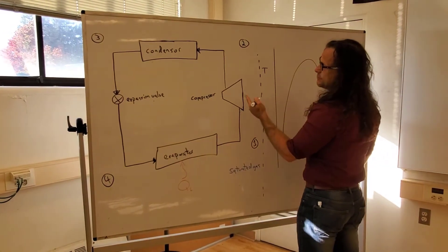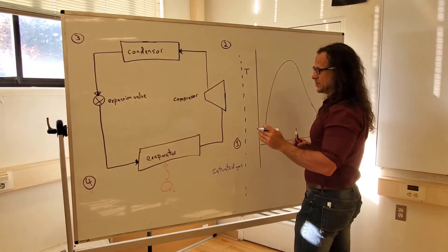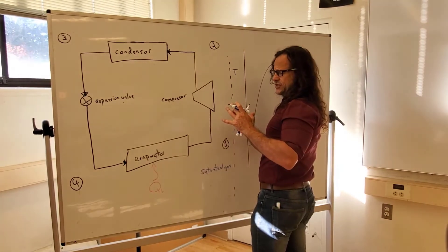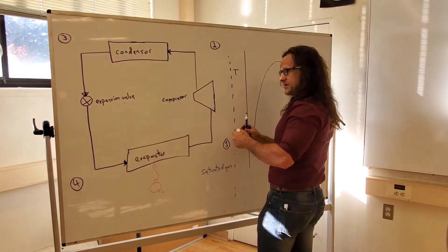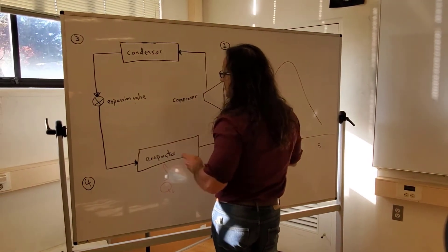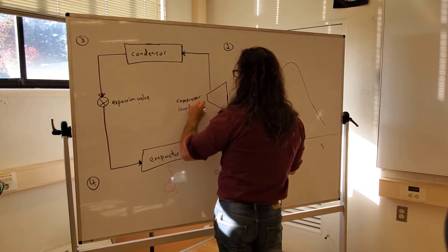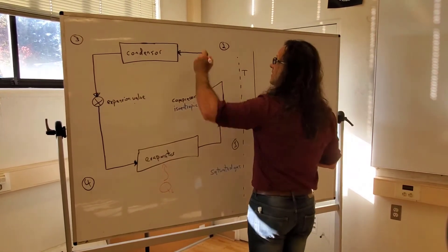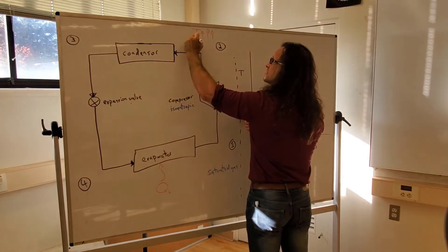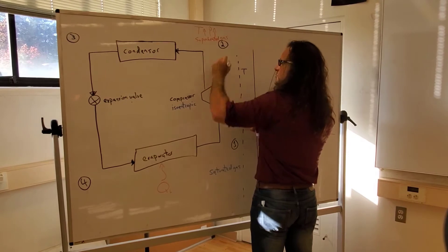The saturated gas comes into the compressor. The compressor takes that gas — compressors compress gas way better than they can compress liquid. It compresses that gas, and out of our compressor comes a gas that has been put under pressure: higher pressure, higher temperature, and now it's superheated, because this compressor is a very special isentropic compressor. That isentropic compressor gives us a high temperature, high pressure, superheated gas out of the compressor.